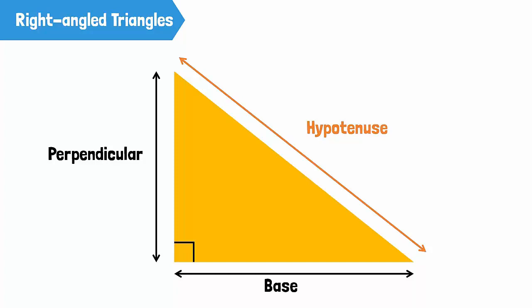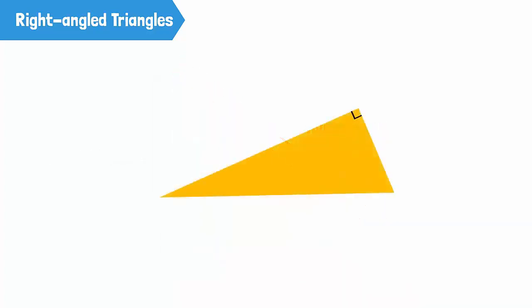Do you think this is true for all right angle triangles? We shall see. Can you guess which side is the hypotenuse for this right angle triangle? Pause this video and take some time to think. You're right! This is the hypotenuse, since this is the side opposite the right angle.